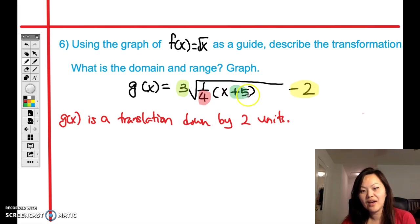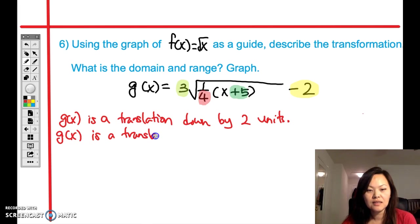And then the next thing is the plus 5 over here. So we know that because it's a plus 5, we're going to the left by 5 units. So g of x is a translation to the left by 5 units.